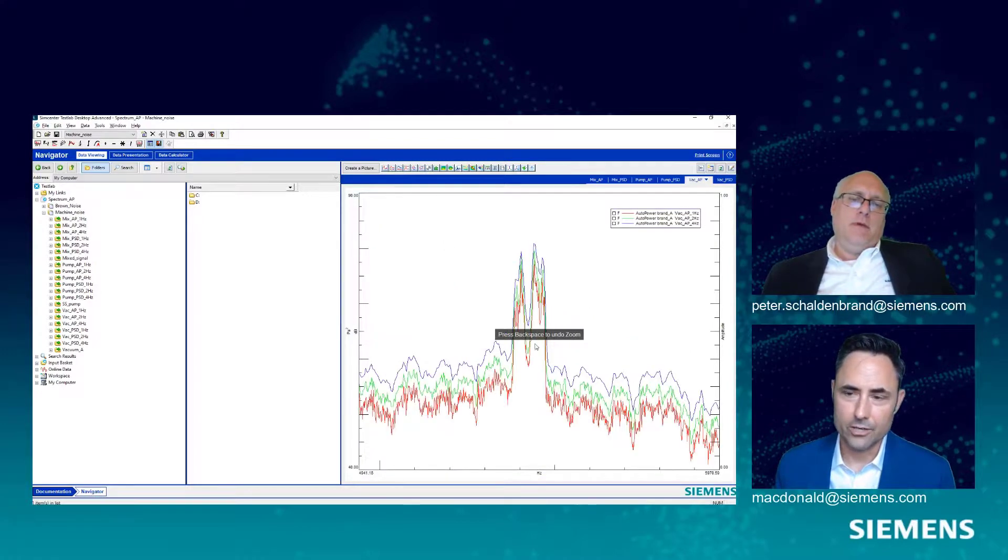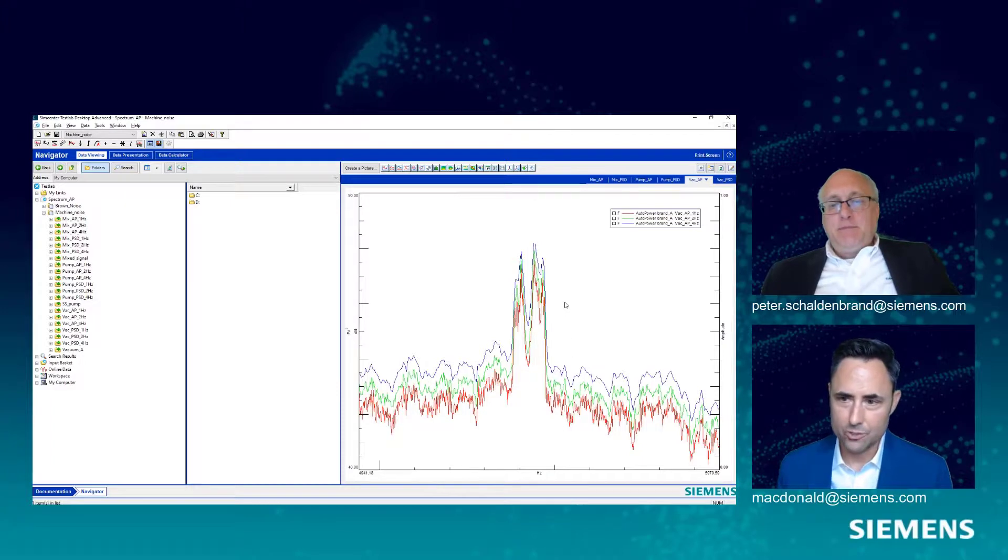However, in a real world signal, it looked like a tone when we were zoomed way out. But when I zoom in on this guy, that spectral line, that tone that that vacuum makes moves around enough that my auto power is still going to have a significant amplitude difference on these tonal light components.